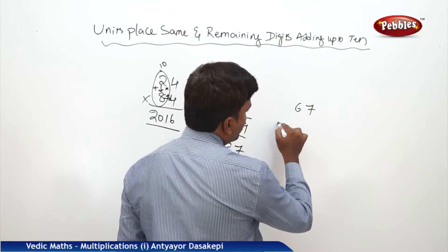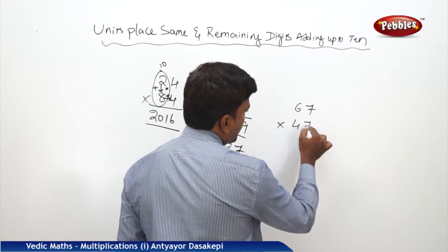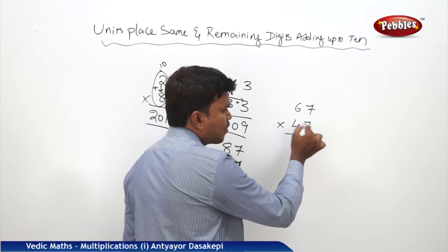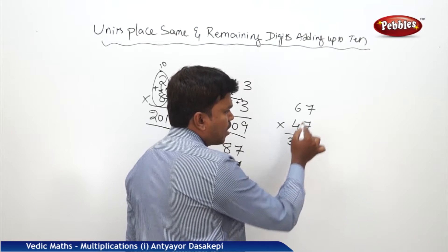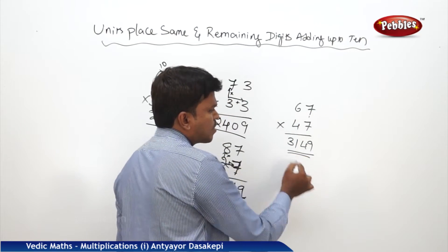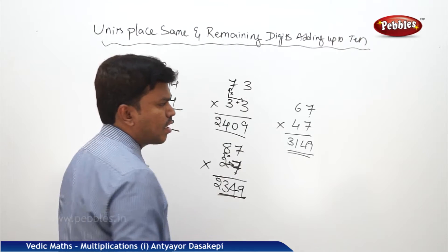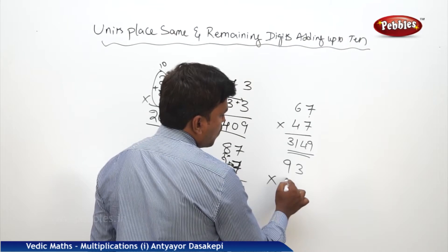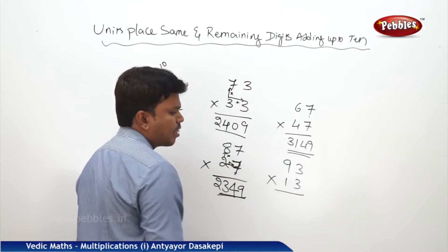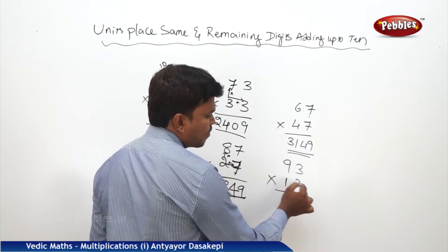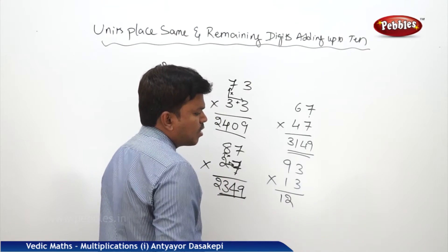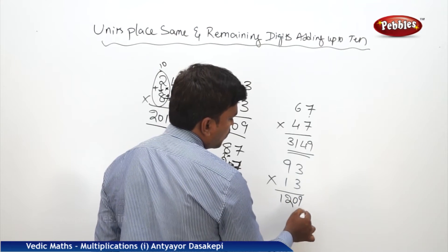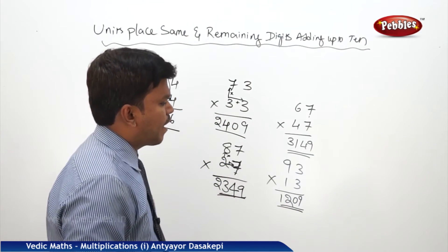Suppose 67 into 47. Multiply 6 into 4: 24. Add 7: 24 plus 7 is 31. Then 7 into 7 is 49. Answer is 3149. Similarly, 93 into 13: 9 into 1 is 9, plus 3 is 12. Then 3 into 3 is 9, written as 09. Answer is 1209.